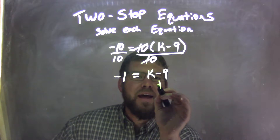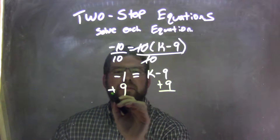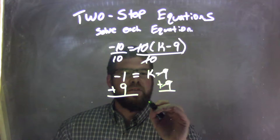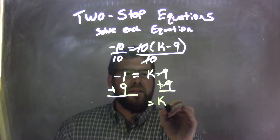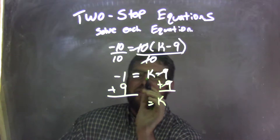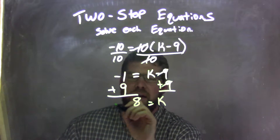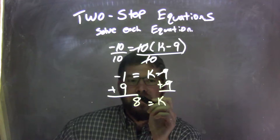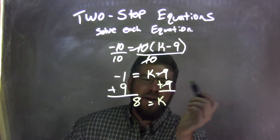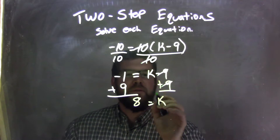I then have to add 9 to both sides. This is the opposite of that subtraction, leaving me k on the left. Negative 1 plus 9 is actually just 8, positive 8. Negative 1 plus 9 is 8 — it's similar to 9 minus 1, which is 8. You can think of it like that if you need to.